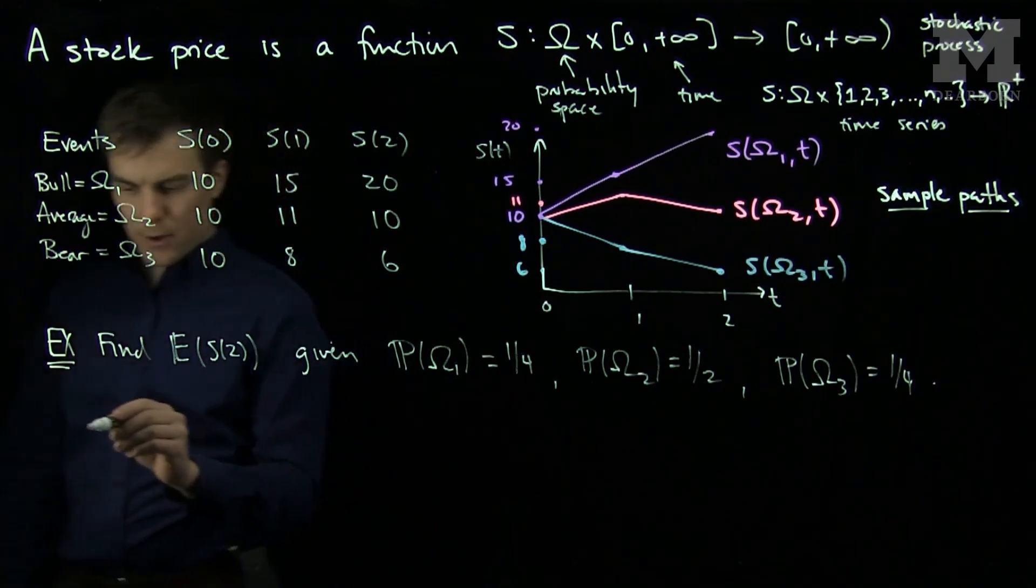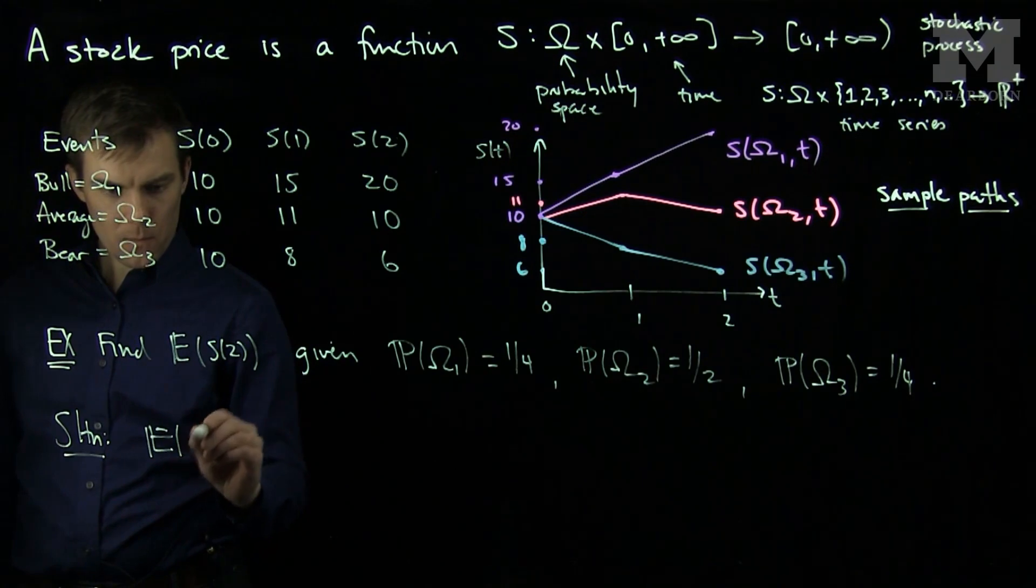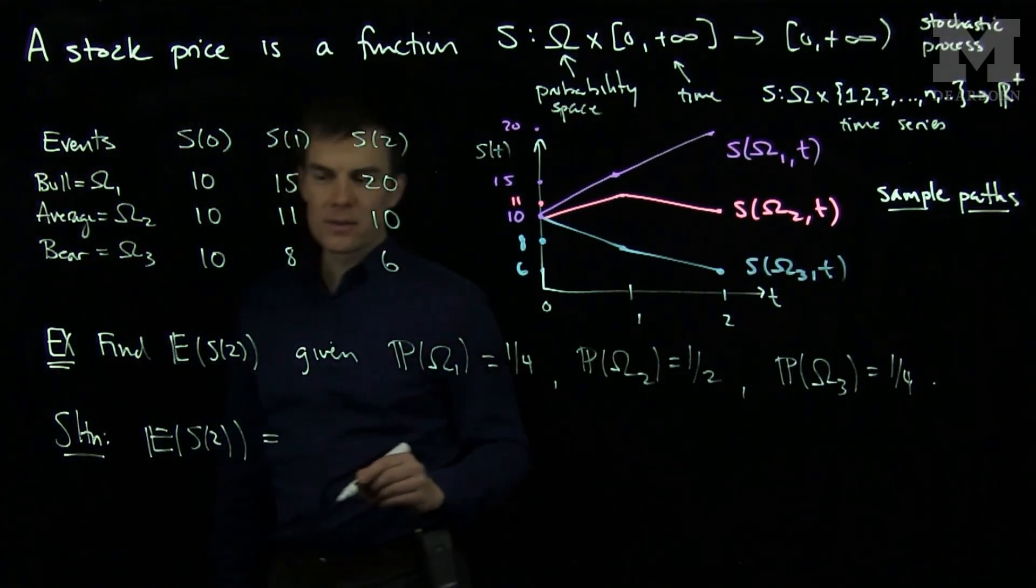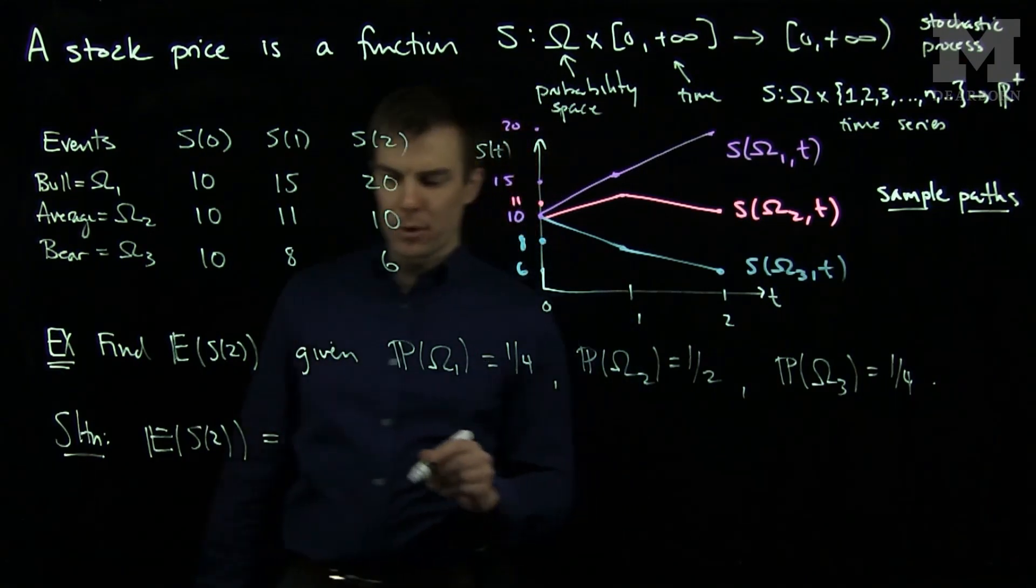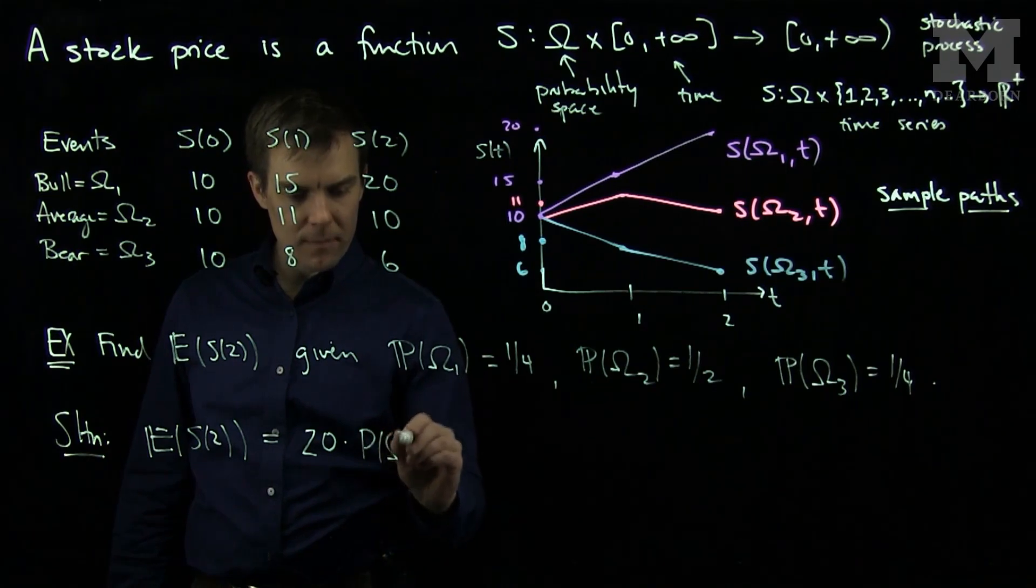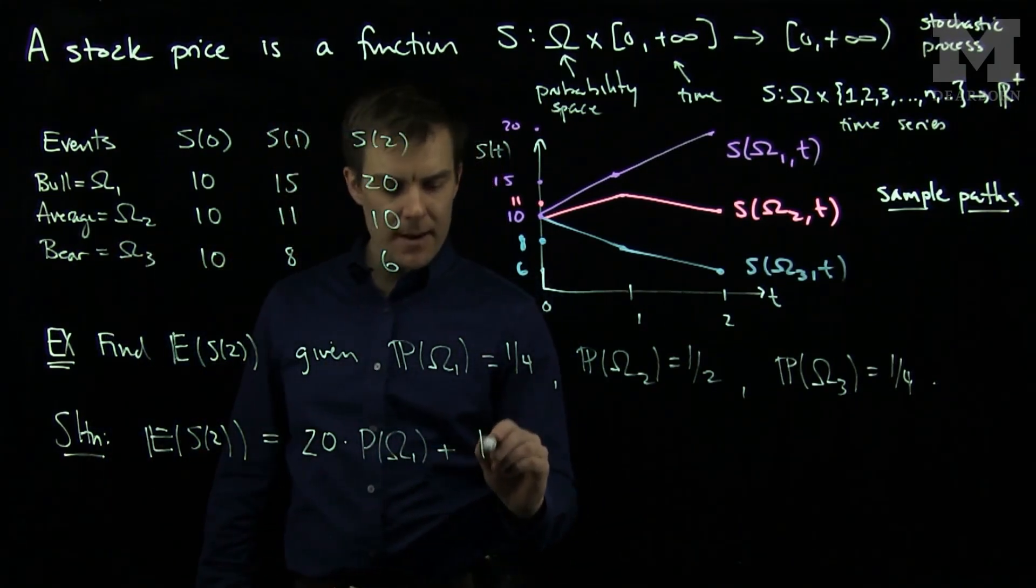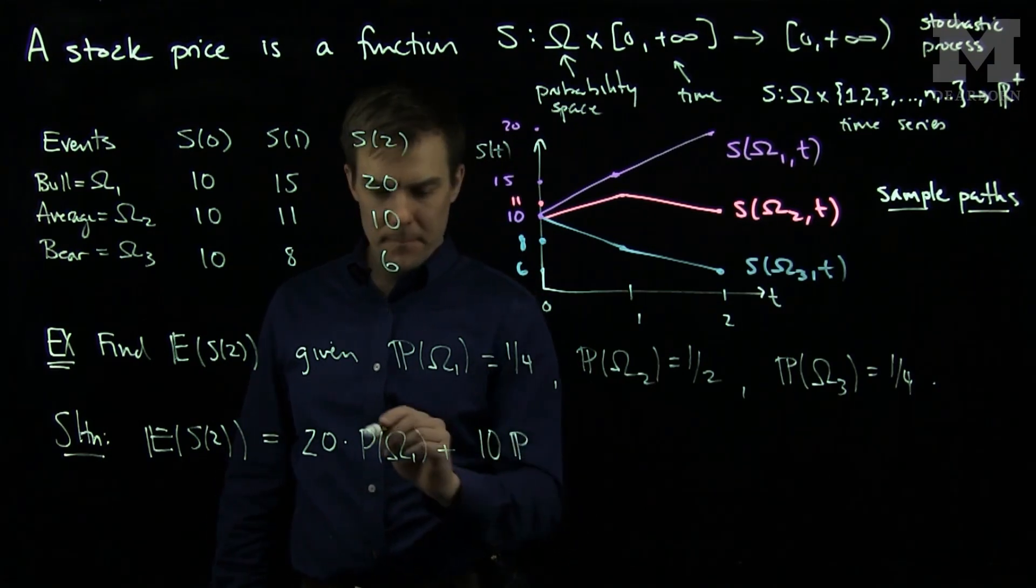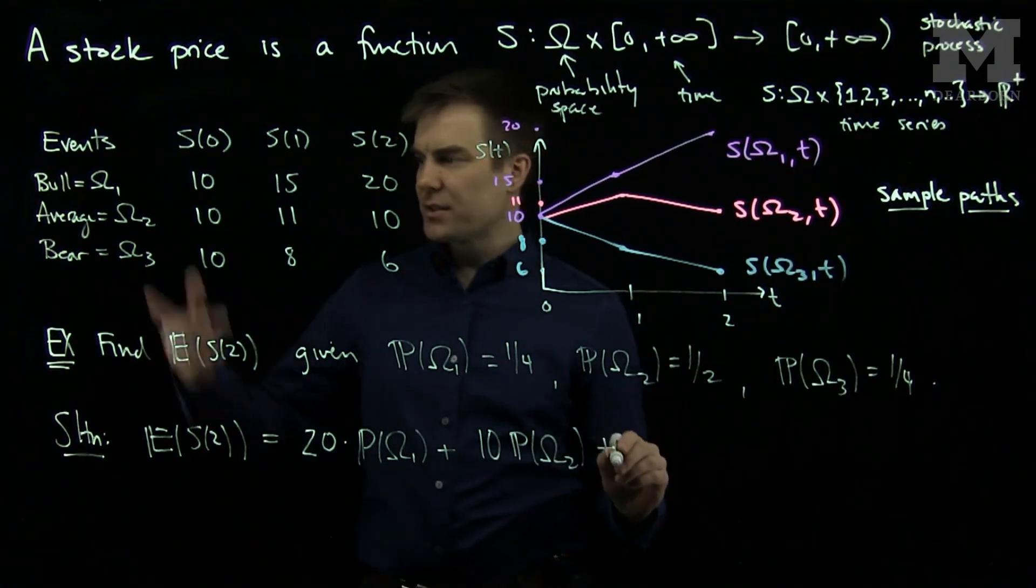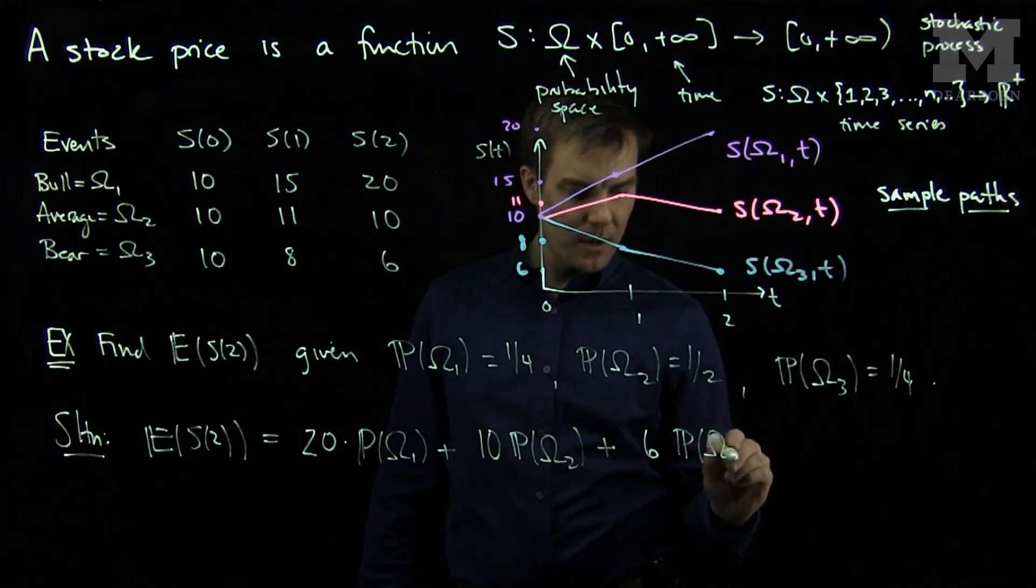So we compute the expected value of S two. We choose the values of S two in each of those situations. So in the bull situation, I have a value of 20 times the probability of omega one plus in the average market, I have 10 times the probability of omega two plus the bear.